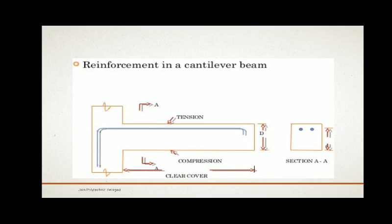Next is reinforcement arrangement in a cantilever beam. Previously it was simply supported, now it is cantilever. In the cantilever beam, again both sections are provided — longitudinal and cross-section — showing how the bar is projected from the column to the cantilever beam, that is the hanging portion.